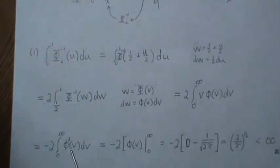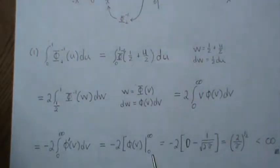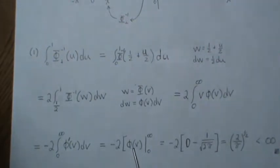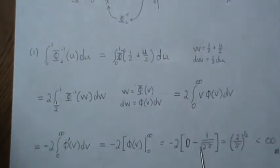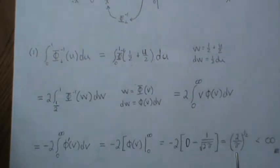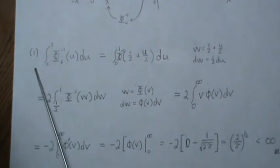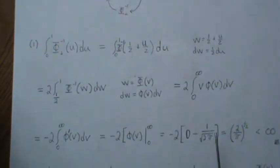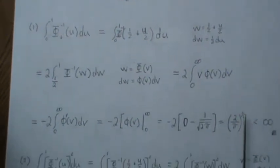We take the anti-derivative of minus phi'(v), which is just phi(v), and evaluate from 0 to infinity. Plugging in infinity to the PDF, in the limit it goes to zero. Plugging in zero to the PDF, you get 1 over the square root of 2 pi. Multiplying through, you get a finite value — less than infinity. So we've shown one of the criteria for the normal score statistic: the integral from 0 to 1 is finite.